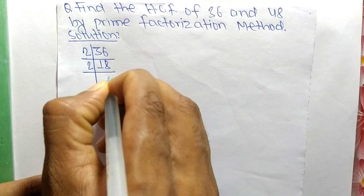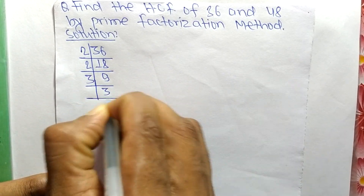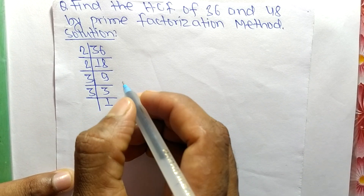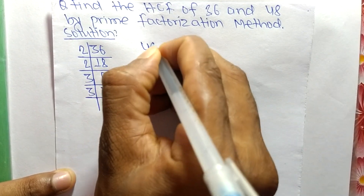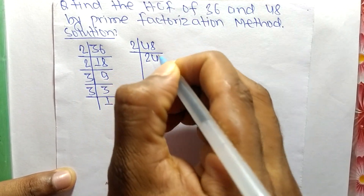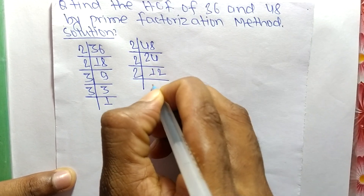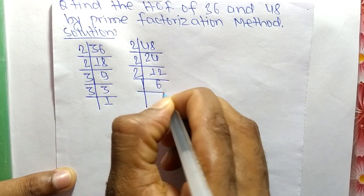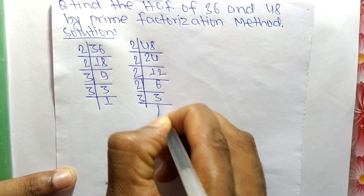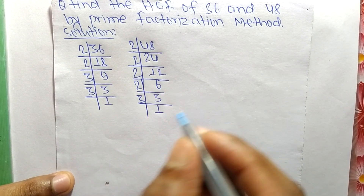2 times 9 means 18, 3 times 3 means 9, and 3 times 1 means 3. Likewise, the prime factors of 48 are: 2 times 24 means 48, 2 times 12 means 24, 2 times 6 means 12, 2 times 3 means 6, and 3 times 1 means 3.